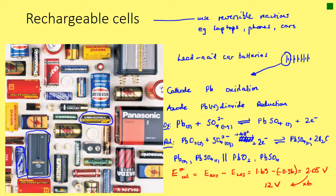From those two half equations we can draw the cell in standard notation: on the left the oxidation reaction starts with Pb(s) and PbSO₄(s), then a salt bridge, then on the right the reduction side with PbO₂(s) and PbSO₄(s).